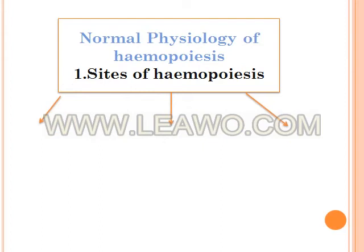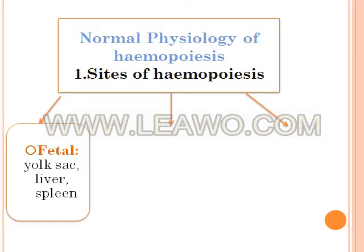In order to understand myeloproliferative neoplasms, we have to revise the normal physiology of hemopoiesis. What are the sites of hemopoiesis throughout stages of development? During fetal life, hemopoiesis occurs in the yolk sac, liver, and spleen.